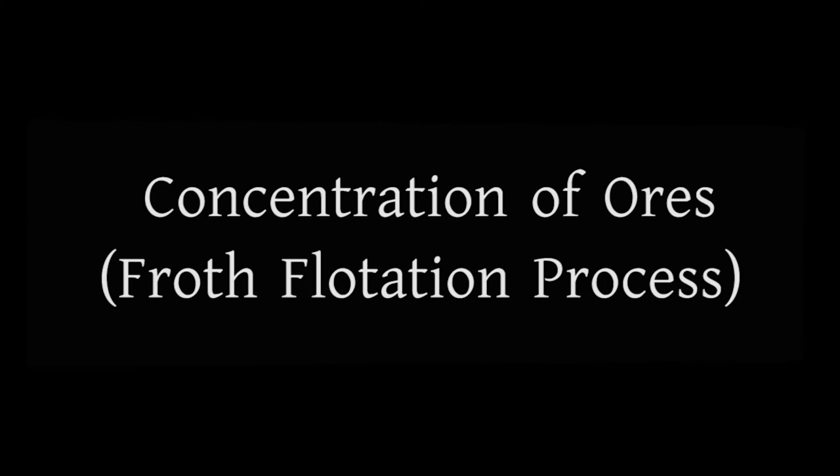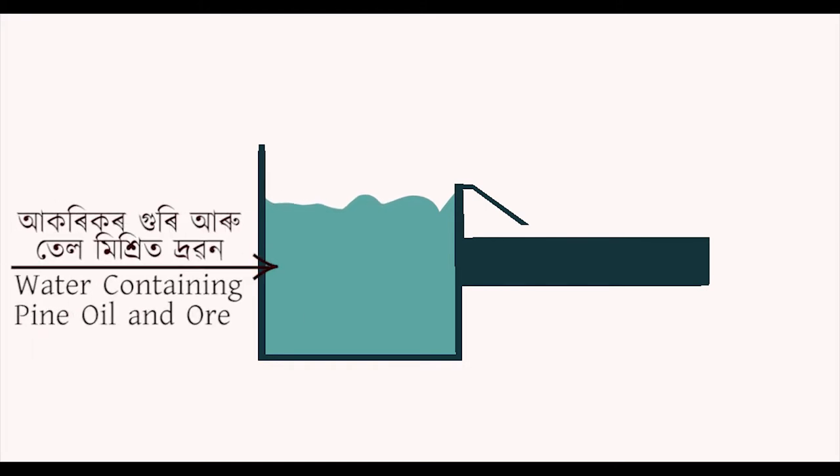In the froth flotation process, the powdered ores are mixed with water and lubricating oil in a large container. Air is passed through the mixture by a pipe that produces froth. The powdered ores rise to the top of the mixture with the froth.